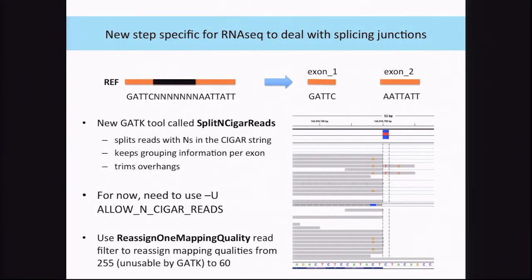The tool called SplitNCigarReads does both things. First, it gets rid of the N's — it takes one read, splices it into two different reads, and keeps the names with an added suffix so it's easy to combine them back if needed. In our pipeline, we don't need to combine them back at any point. It also trims the overhangs that are noisy in order to reduce noise and make sure we are not calling these as false positive events.